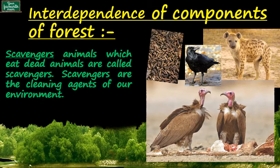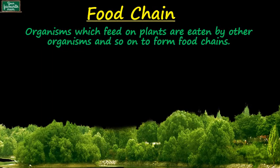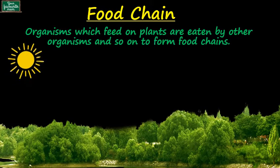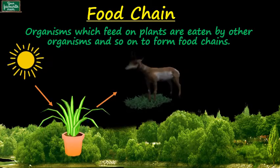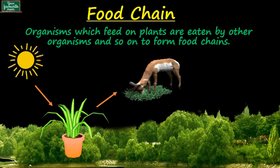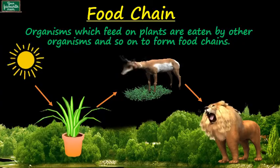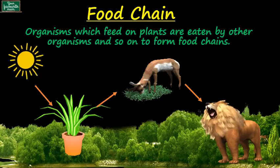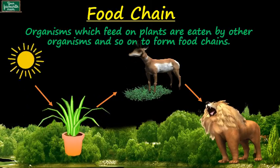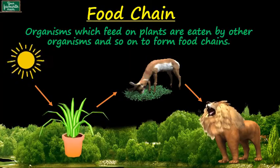Scavengers are the cleaning agents of our environment, but they are not decomposers as they do not break down complex dead matter into simple ones. Now let's talk about food chains. Organisms which feed on plants are eaten by other organisms and so on to form food chains. For example, the sun is the primary source of energy. Its energy is utilized by plants to make their food, which in turn gets eaten by herbivore animals like deer and cows. These herbivore animals are then consumed by carnivore animals like lions and tigers. So there are many food chains in the forest, and all the food chains are linked together. If any food chain is disturbed, it will affect other food chains as well.